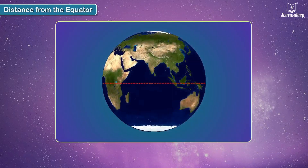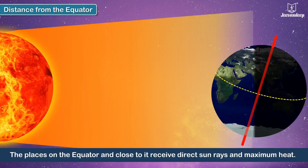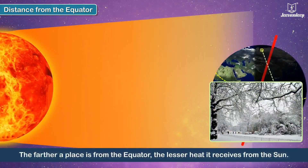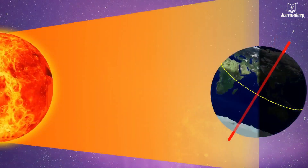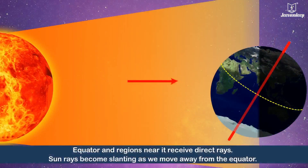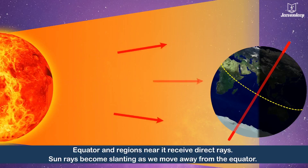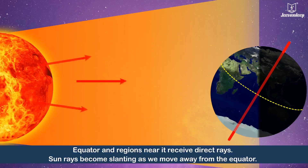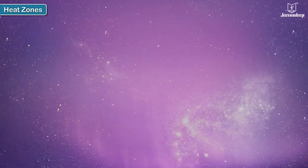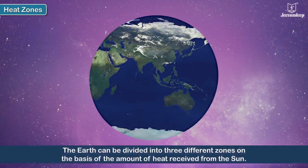Distance from the equator is a very important factor. The places on the equator and close to it receive direct sun rays and maximum heat. The farther a place is from the equator, the lesser heat it receives from the sun. While the equator and regions near it receive direct rays, sun rays become more and more slanting as we move away from the equator and towards the poles.